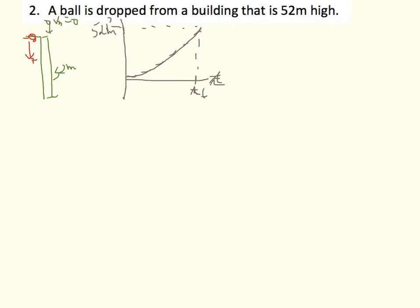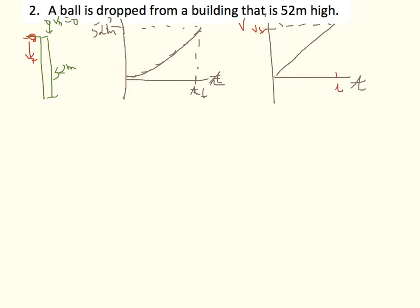The velocity must be increasing the entire time due to gravity, so I'll draw a velocity-time graph showing velocity increasing constantly from zero. I don't know the final velocity, and I don't know what the final time is — but I know it must be the same time as in the position graph.